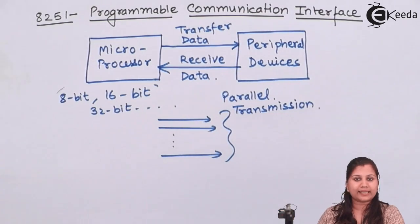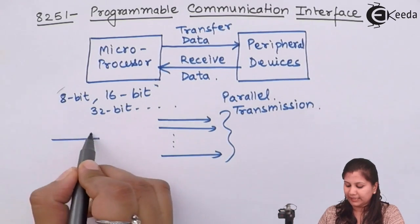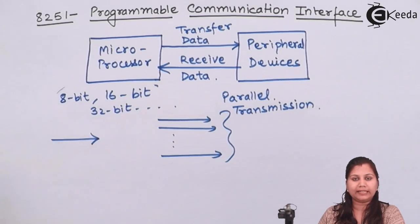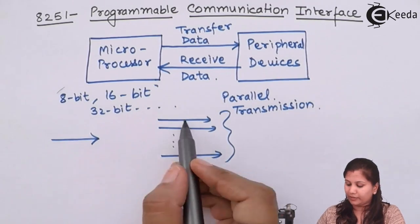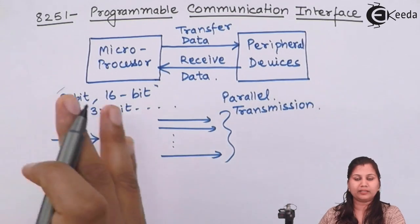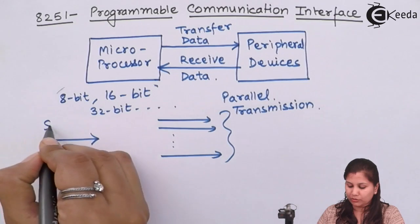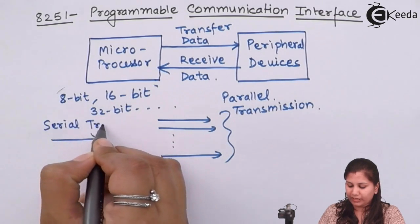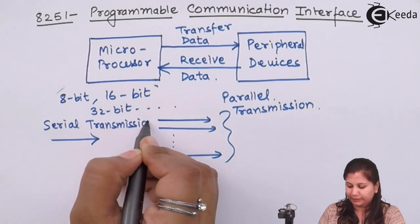The second type is serial transmission. In serial transmission, only a single line is used and the 8 bits are transmitted one after the other. In parallel transmission all 8 bits are transmitted at the same time, whereas in serial transmission only a single line is there and all 8 bits are transmitted one after the other.